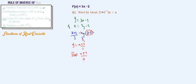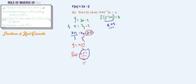We are done finding f⁻¹(x). Now we need to verify f∘f⁻¹(x) = x. f∘f⁻¹(x) means you have f on the outside with f⁻¹(x) inside the bracket — simplifying should give x. First, simplify the inside: f⁻¹(x) = (x + 2)/3.